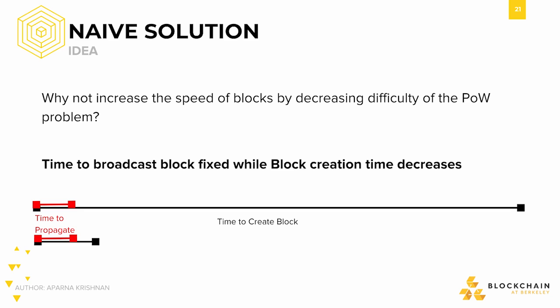The main issue is that if we decrease the difficulty of the proof-of-work problem, and thus the block time, the block propagation time is still the same. The ratio of block propagation time to block creation time is something that we must balance very carefully. In Bitcoin, we set the block time high because we want to be confident that a good portion of the network sees our new block, thus avoiding natural forks.